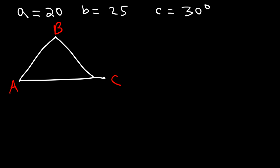Let's say if A is 20, B is 25, and C is 30 degrees. Go ahead and calculate the area of the triangle. So let's draw a picture. So this is going to be angle A, B, and C. So angle C is 30 degrees. Side A is 20. Side B is 25. So we have a side, angle, side triangle.